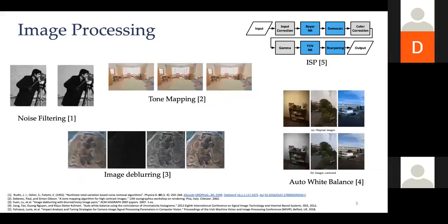This allows for many different imaging techniques and lets you work with sparser data. The idea is you compute the image as opposed to sensing it — I'll spend the bulk of my talk on this. Feel free to ask questions at any point or hold them to the end. In image processing, common applications include noise filtering, image deblurring, tone mapping, and auto white balance.